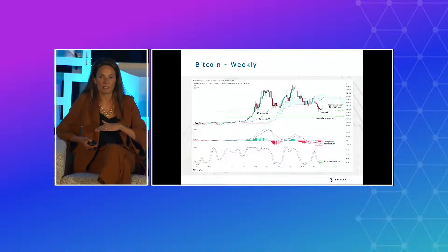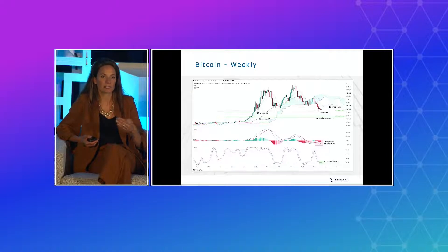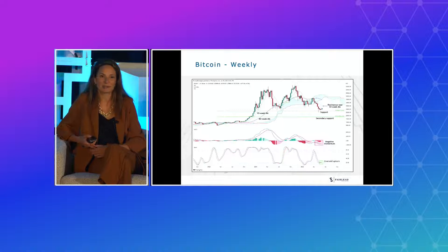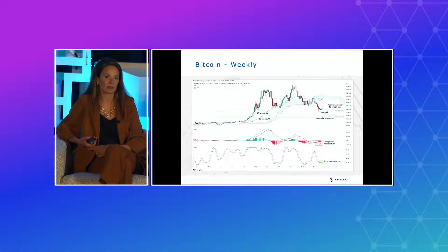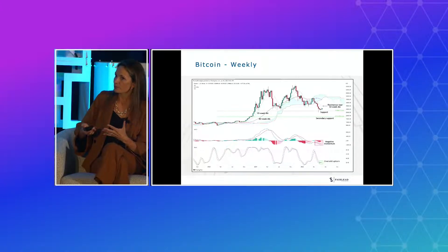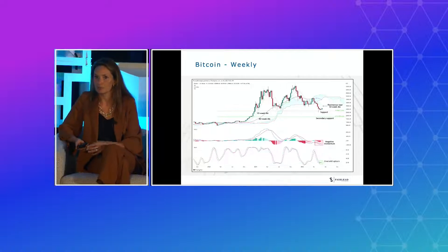I'd encourage you to set up a chart on part of your screen, keep watching it, and you'll start to understand the characteristics of the security you're tracking. It can be as obvious as a 200-day moving average. We like to use Fibonacci retracement levels — for Bitcoin, the support we're watching is based on a Fibonacci level at roughly just north of 27,000. If that level breaks, the next support is roughly 19,500 down to the mid-18,000 range. That gives you a sense of what risk might be if we see a breakdown.